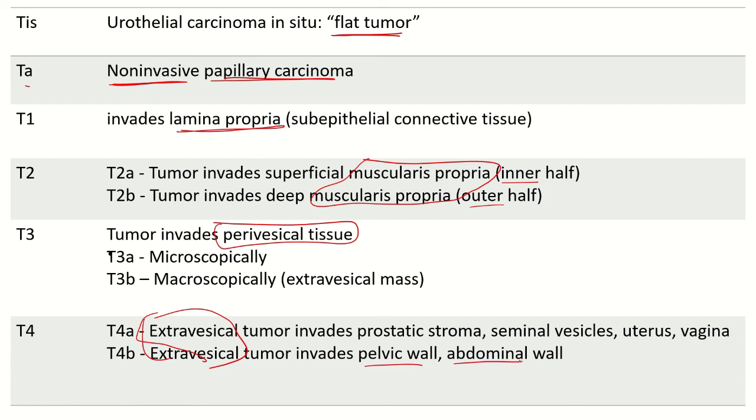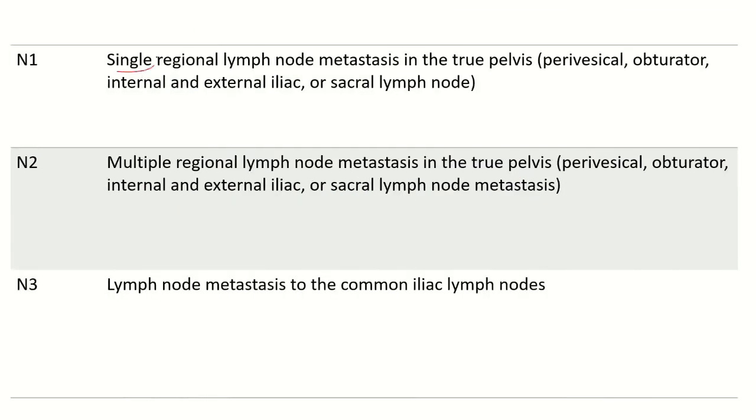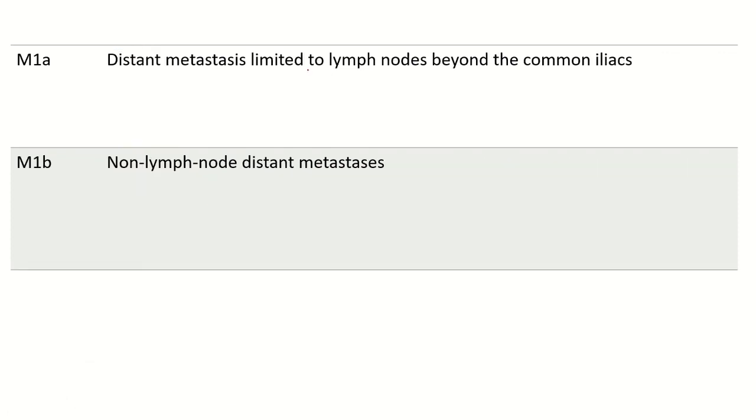Invasion into the wall is T4B. N1 if there is single regional lymph node metastasis in the true pelvis. N2 is multiple regional lymph node metastasis in the true pelvis. N3 is lymph node metastasis to common iliac lymph nodes. M1a is distant metastasis limited to lymph nodes beyond common iliacs. M1b is non-lymph node distant metastasis.